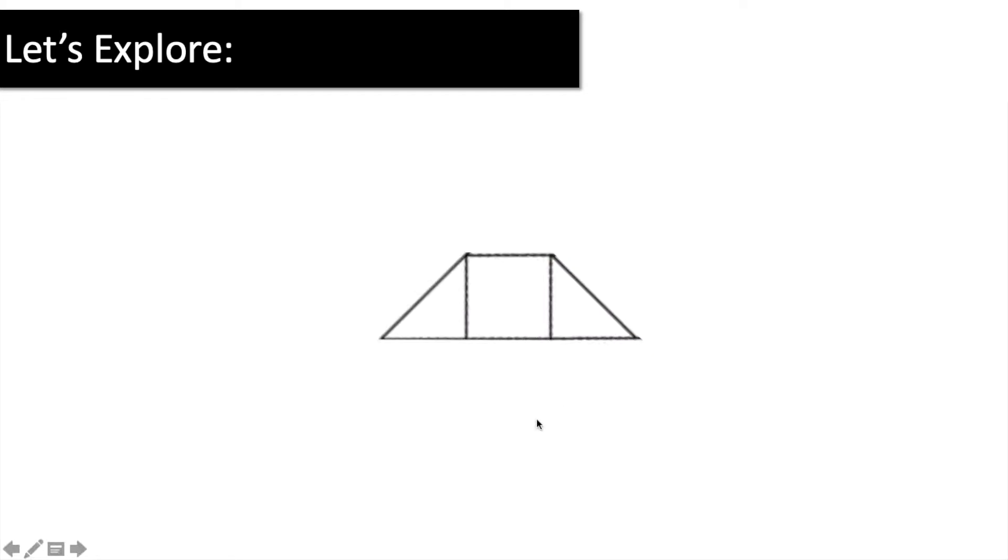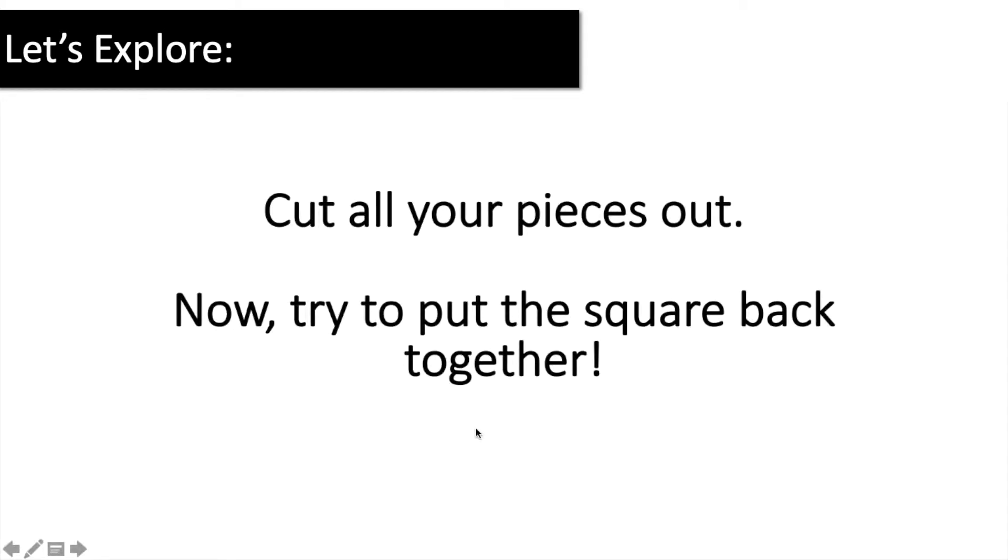What shape do we see now? Oh, we see another smaller quadrilateral. Then students are just going to cut all their pieces out, and they are going to try to put the square back together. It is going to be really tempting to help our students put the square back together. We really want them to struggle. We want them to persevere. We want them to practice their spatial reasoning with these pieces.